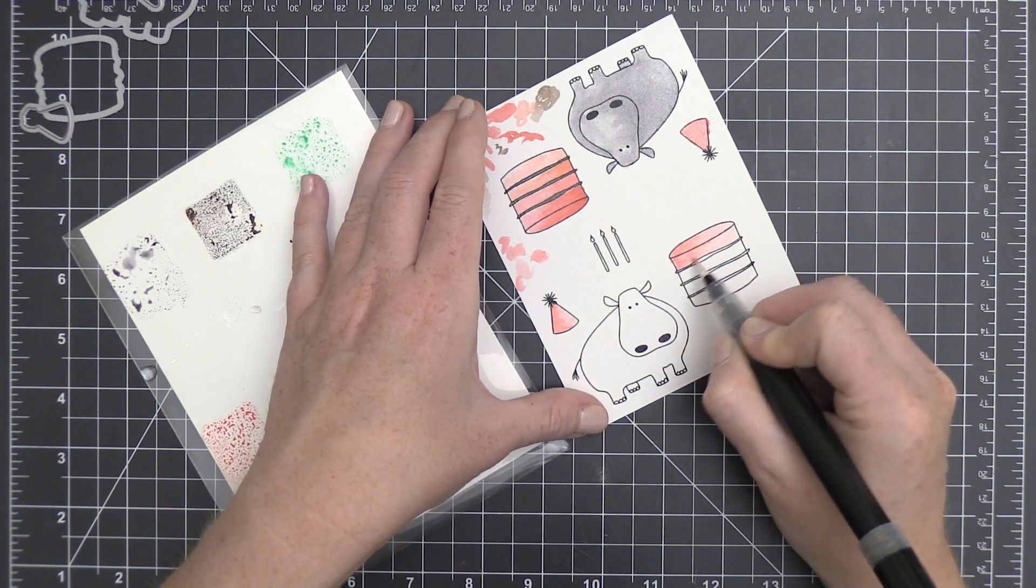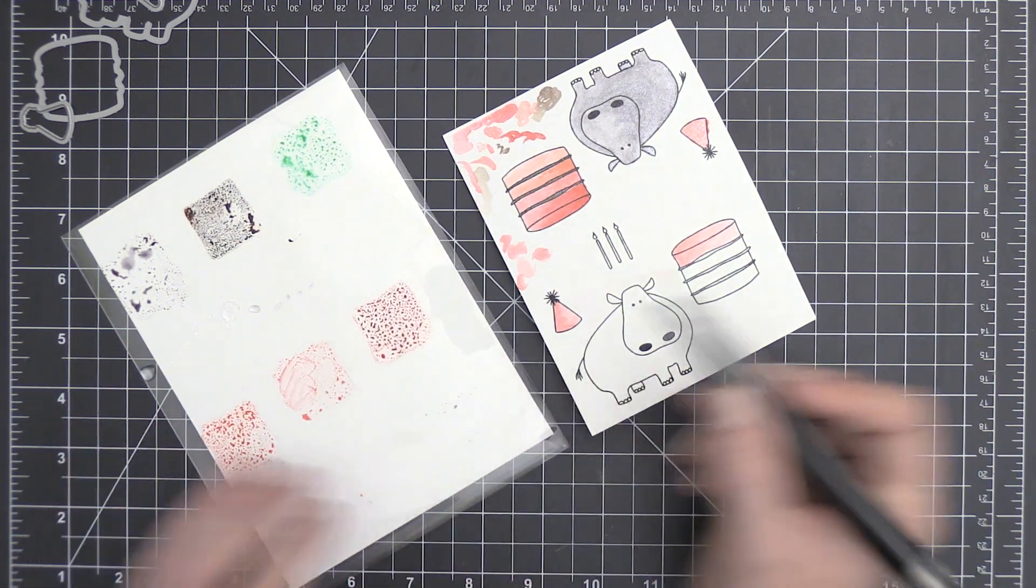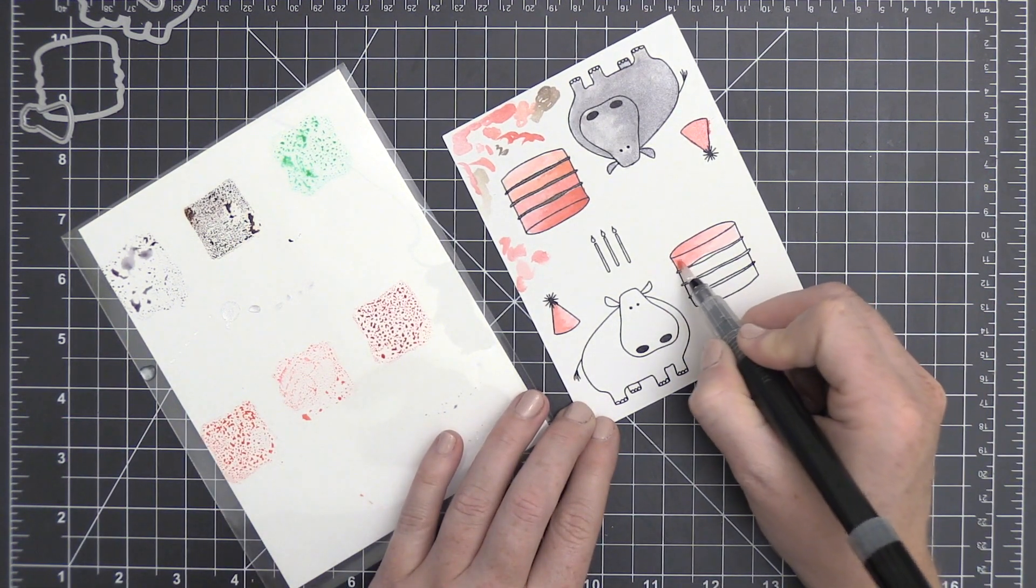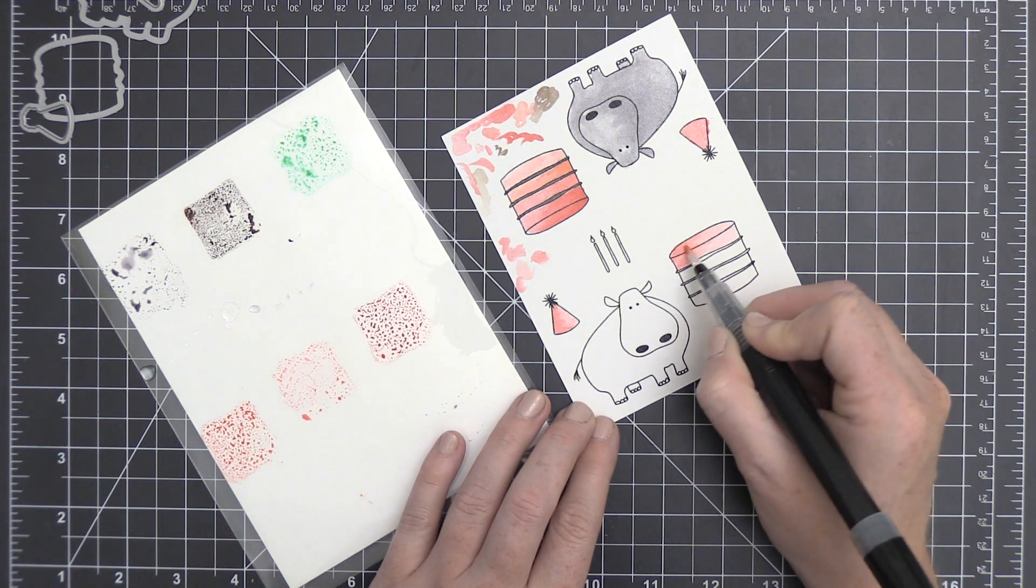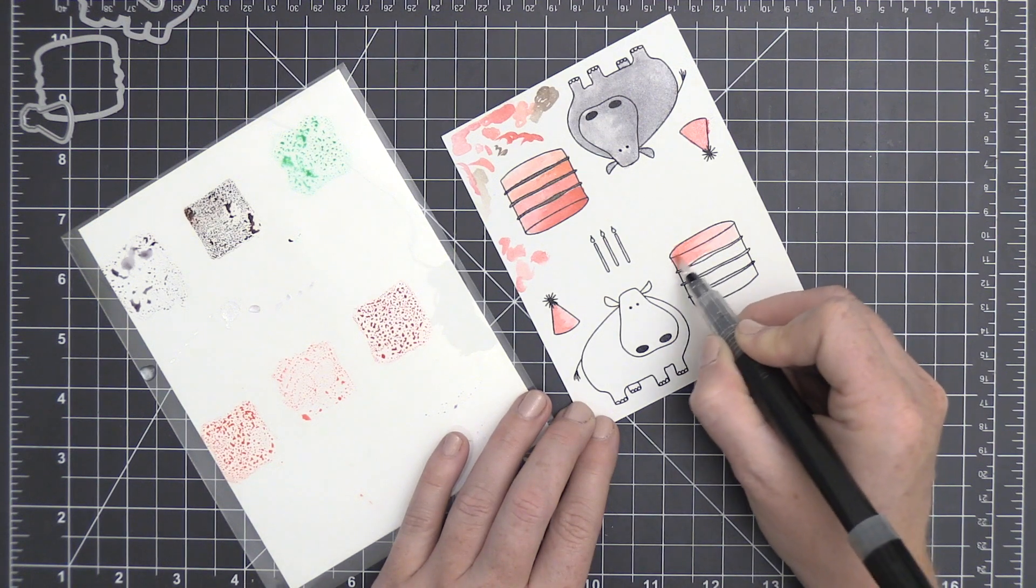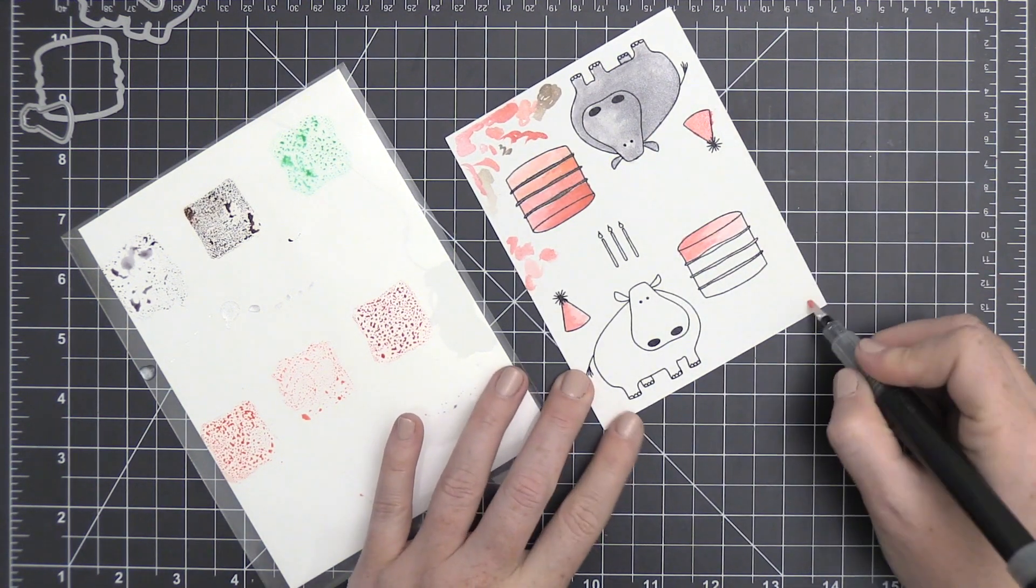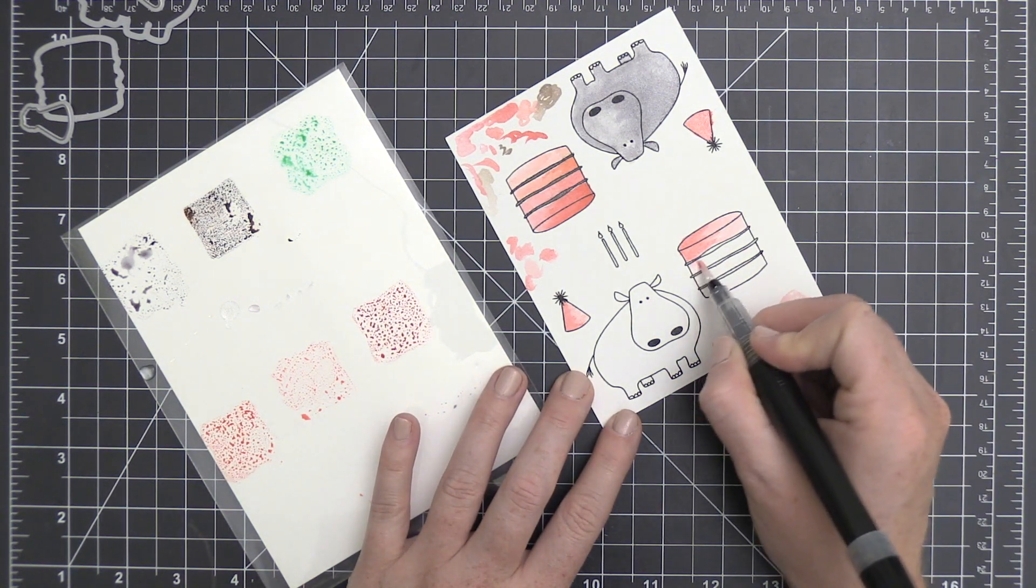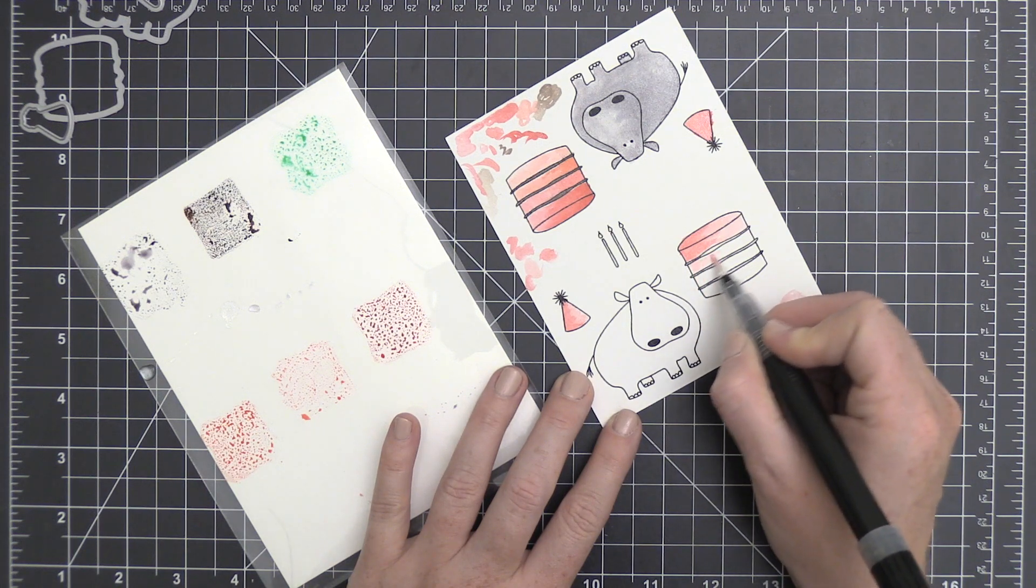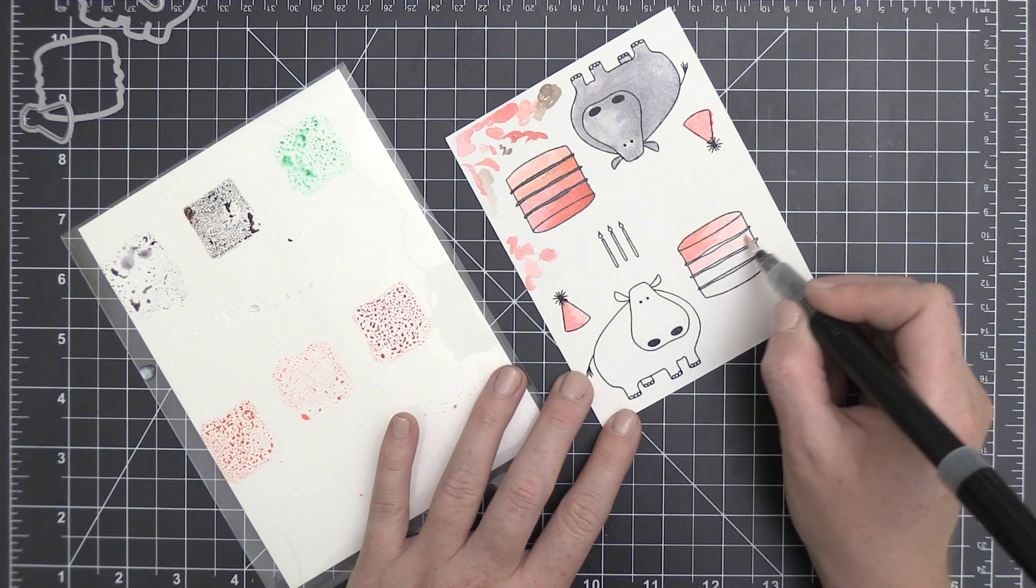So you see there through the magic of television, I have re-stamped this. I originally colored that birthday cake using Festive Berries, Worn Lipstick and Abandoned Coral, but I decided I didn't necessarily want that ombre look. So I went back and I colored my cake with the Worn Lipstick. I added a base layer of that and then I added a little bit of shading on that left hand side with the Abandoned Coral and I liked this result a lot better.